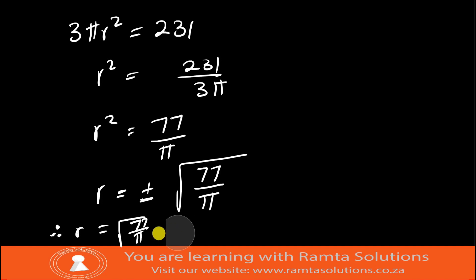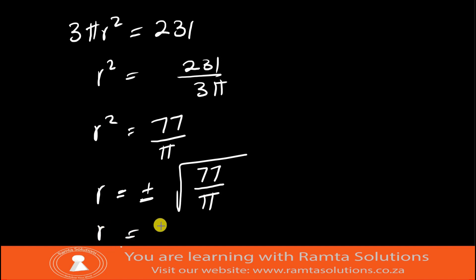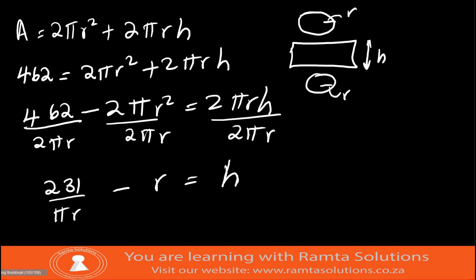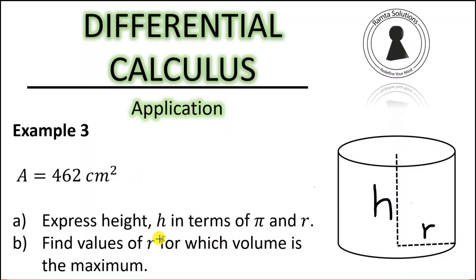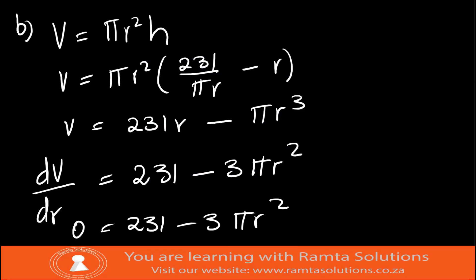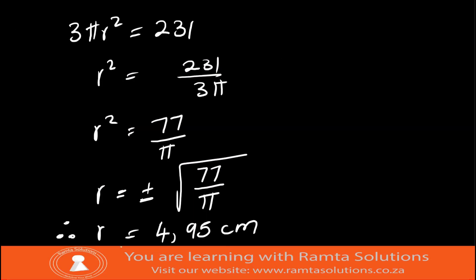Calculating: √(77/π) gives r ≈ 4.95 centimeters. So r equals 4.95 centimeters — this is the radius that makes the volume a maximum. Alright guys, that's it for this topic. I'll see you next time and I hope you make the best out of this. Bye bye.